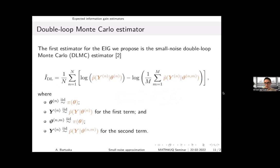For Monte Carlo, we approximate any integral by drawing random samples from the appropriate probability distributions and using a finite sum. The more samples we use, the better the approximation.